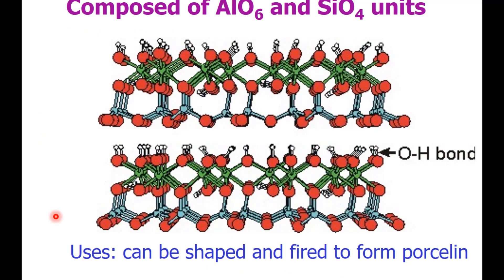Another type of network covalent solid very popular in North Carolina is the clays with which we make pottery. These are composed of aluminum and oxygen and silicon and oxygen units, and some of them will have hydrogen bonds as well at the end. North Carolina has much beautiful pottery created by artists, and I hope that next time you look at some pottery you appreciate what it's made of.